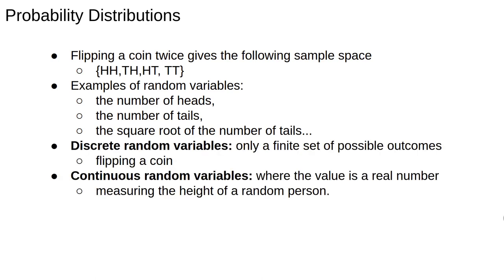Sometimes it's important to distinguish between discrete random variables, where only a finite set of outcomes are possible, and continuous random variables, where the value can be any real number. Our simple experiments have all had discrete sample spaces, but an example of a continuous random variable could be measuring the height of a random person.